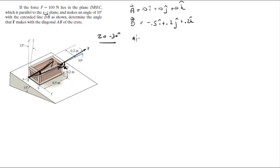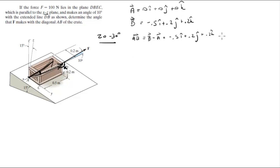Now you have the vector that goes from A to B, which is the one we're going to be comparing with F. This vector can be found by doing B minus A, and it's going to be negative 0.5i + 0.2j + 0.2k — same as B since A is (0, 0, 0). Now you want to find the magnitude of this vector, found by taking the square root of the sum of the squared components.